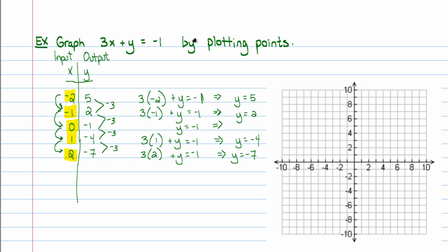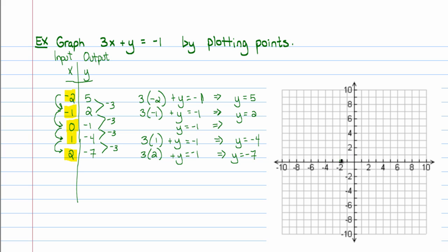Let's go ahead and plot these points on graph paper. I'll plot negative 2 comma positive 5, then negative 1 comma positive 2, then 0 comma negative 1, then 1 comma negative 4, and finally 2 comma negative 7. If you draw a curve connecting those points, it turns out it will be a line. That's how you graph by plotting points — you build a table, plot the points, and you're done.